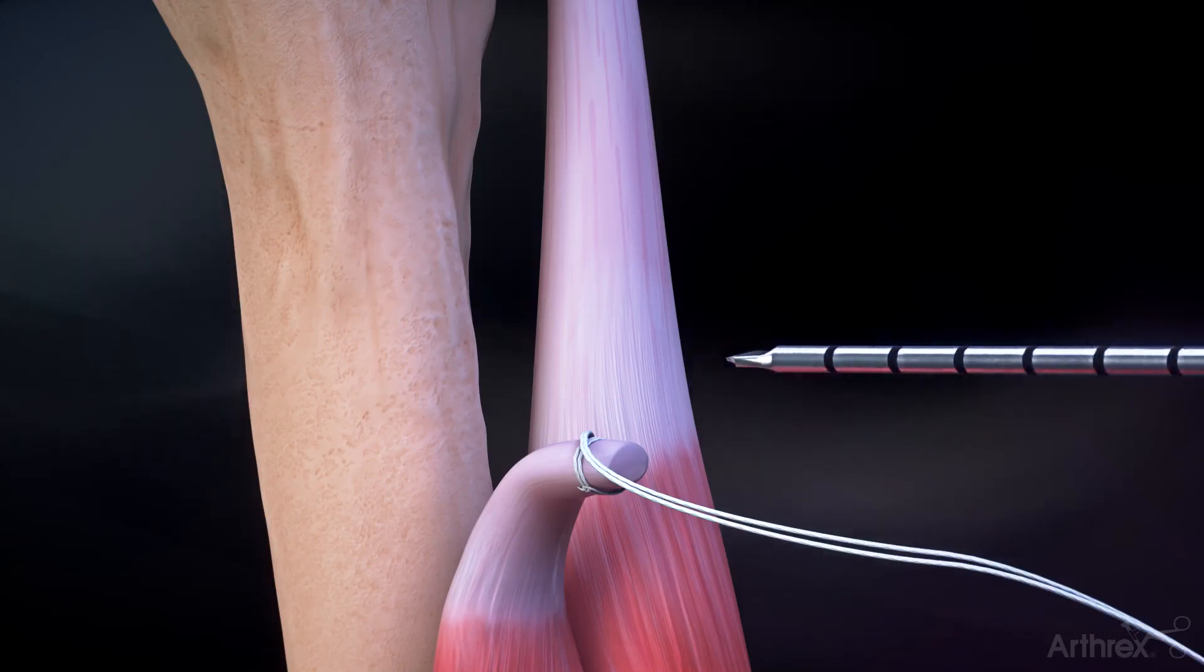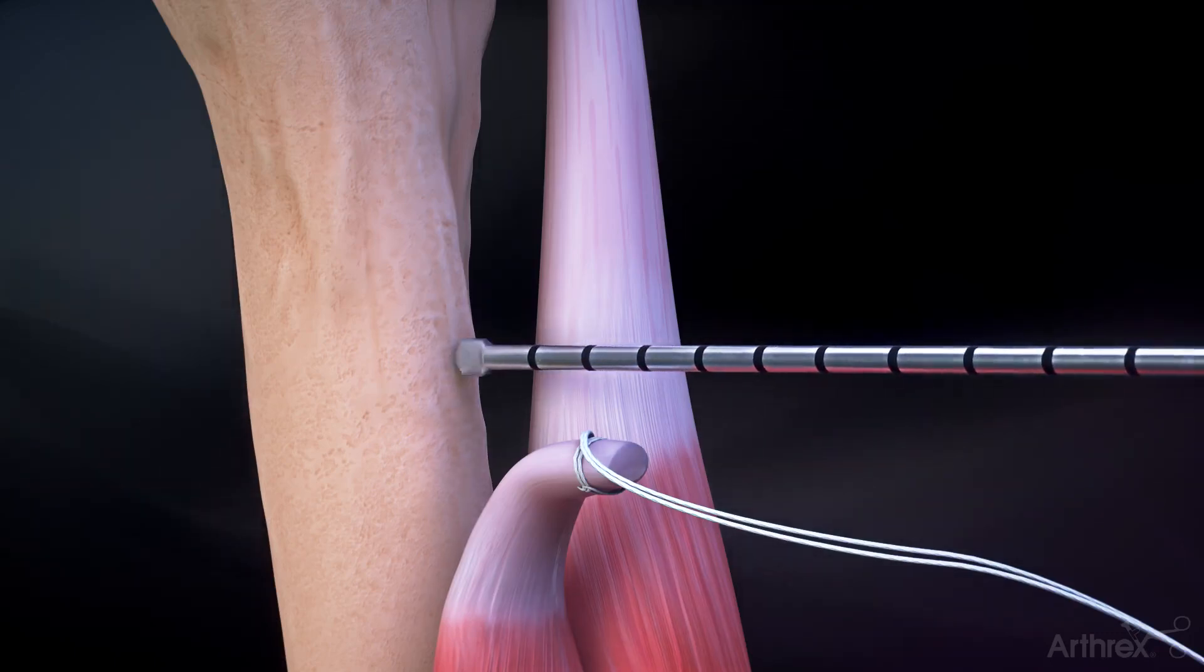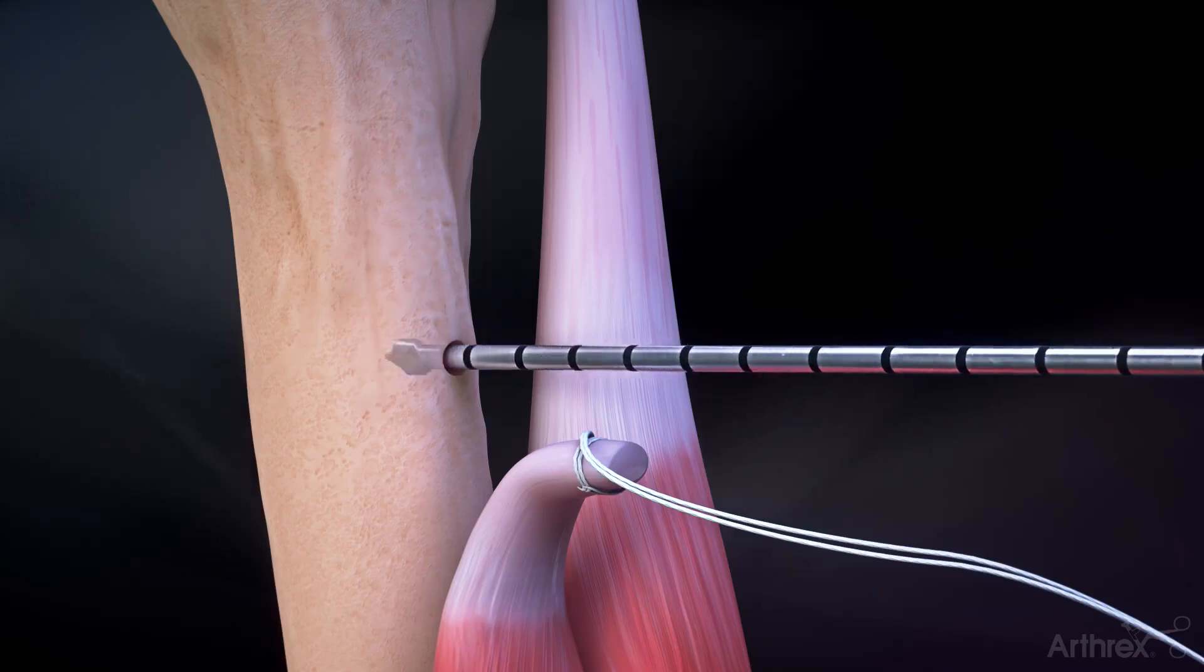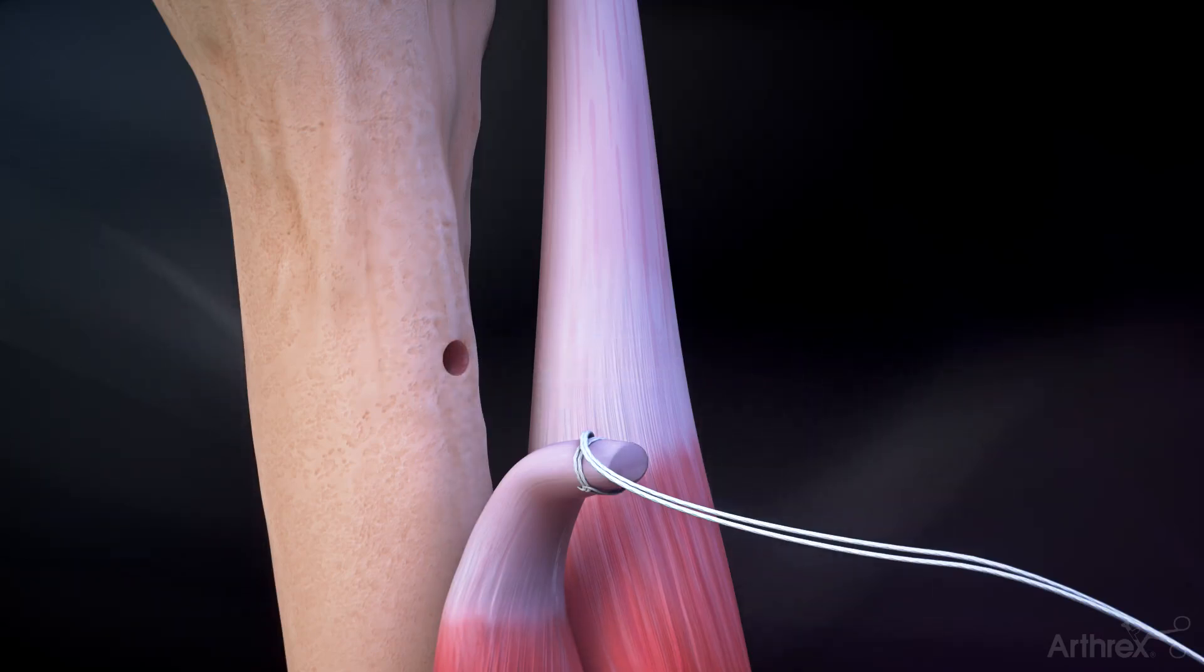Place the drill at the desired location on the bony surface of the proximal humerus and drill a unicortical tunnel using the 3.7 millimeter spade tip drill.